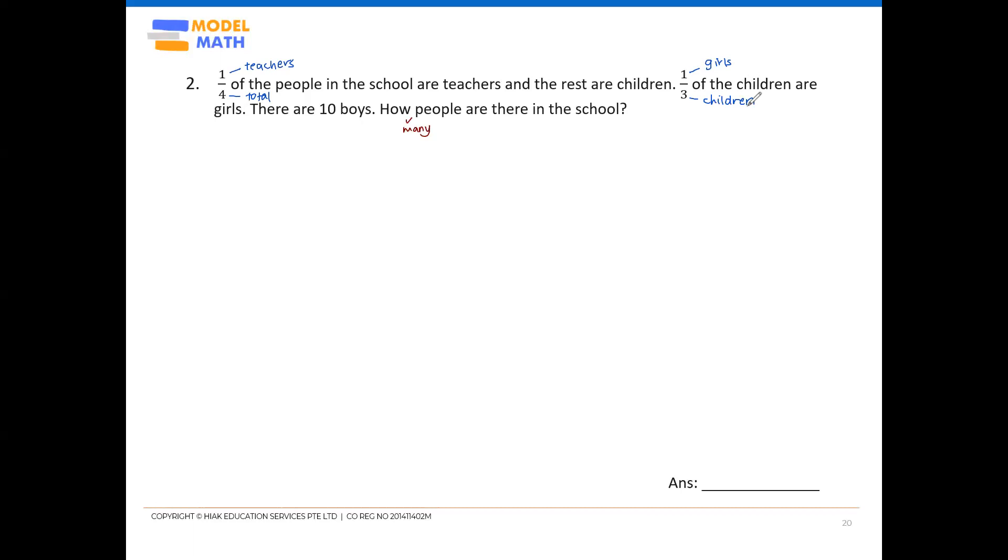So, three units here have to be the children. Now, you see what I mean here? Both denominators here, they do not actually represent the same thing. This four and this three, this four represents the total people, everyone, teachers and students.